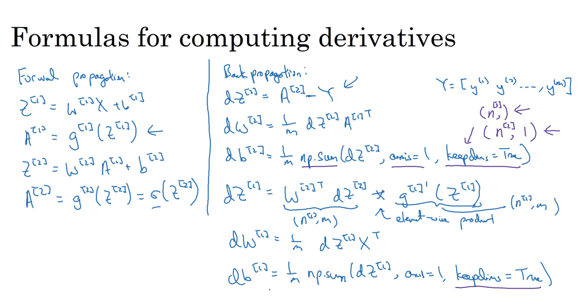Here, db1 will be a n1 by 1 vector. And so, you want Python, you want np.sum to output something of this dimension, rather than a funny rank 1 array of that dimension, which could end up messing up some of your later calculations. The other way would be to not have to keepdims parameter, but to explicitly call, you know, reshape, to reshape the output of np.sum into this dimension, which you would like db to have.